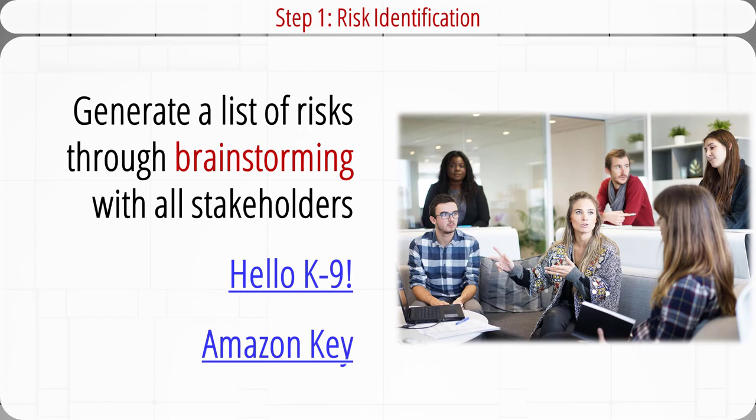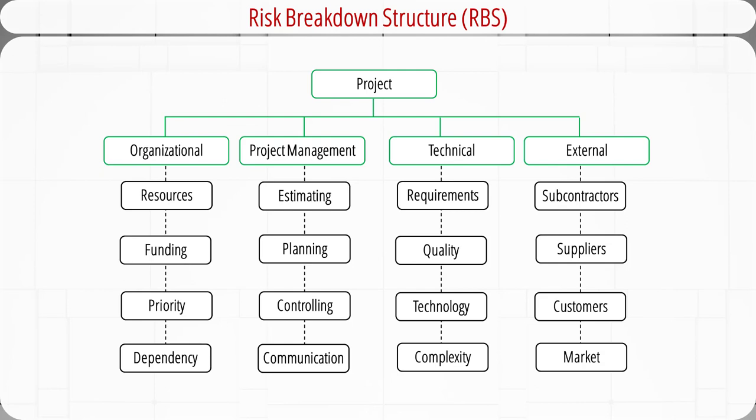After the potential risks have been identified, later during the assessment phase, participants will have a chance to analyze and filter out unreasonable risks. The risk breakdown structure can be used to identify risks. A risk breakdown structure is a hierarchical representation that helps the project team consider the full range of sources from which individual project risks may arise. This is an example of a risk breakdown structure.